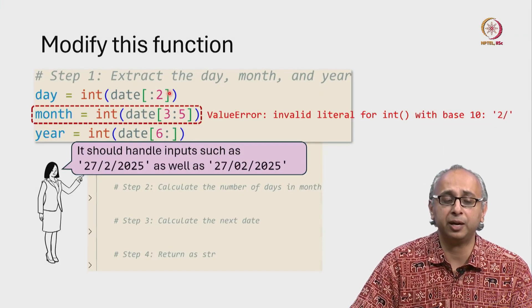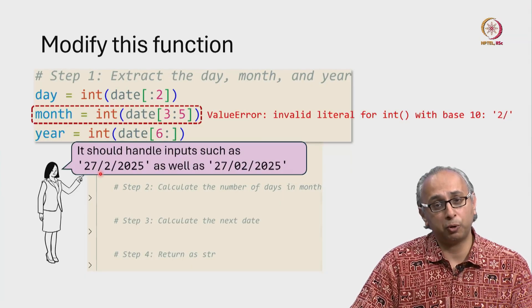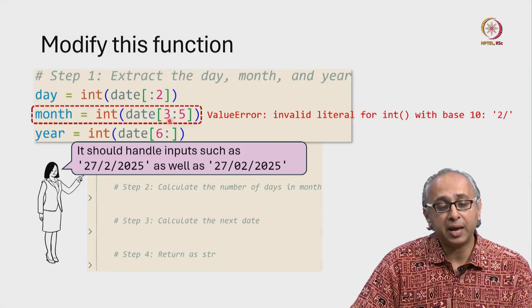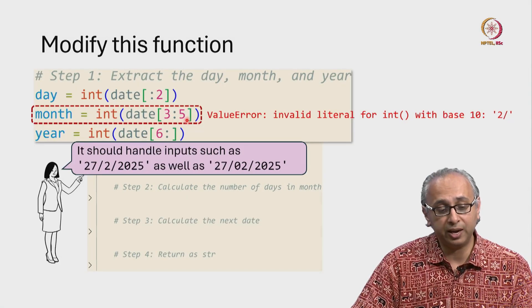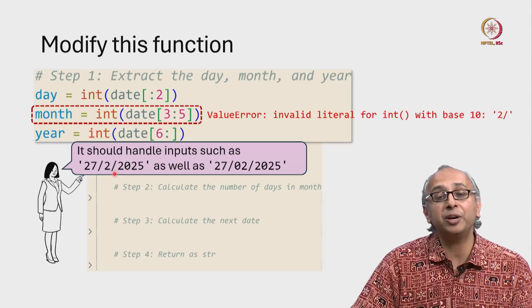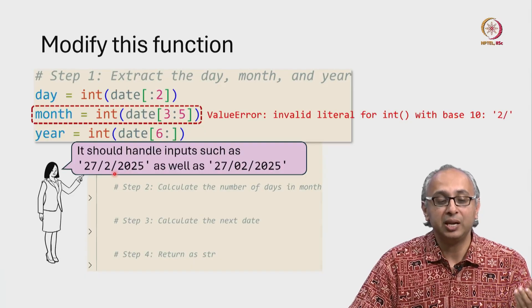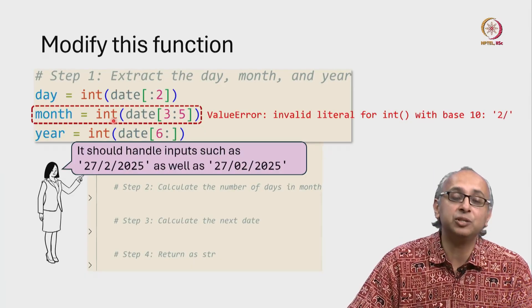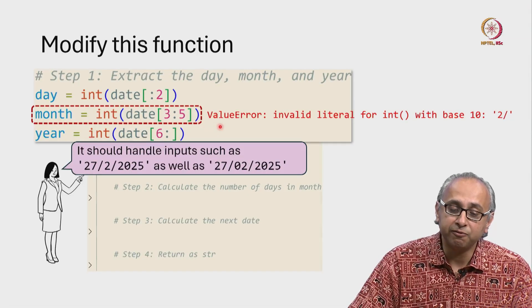So this is index 0, index 1, index 2 is the forward slash. Now we try to access everything from index 3 up to but not including index 5. So index 3 is the letter 2, index 4 is the letter slash, and we pull out 2 slash and we try to convert that into an int, and that results in an error. So we get this value error.